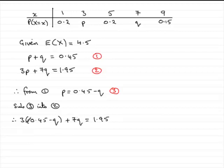So I need to expand the bracket here. 3 multiplied by 0.45 gives me 1.35, then we've got minus 3q, plus 7q, that equals 1.95.